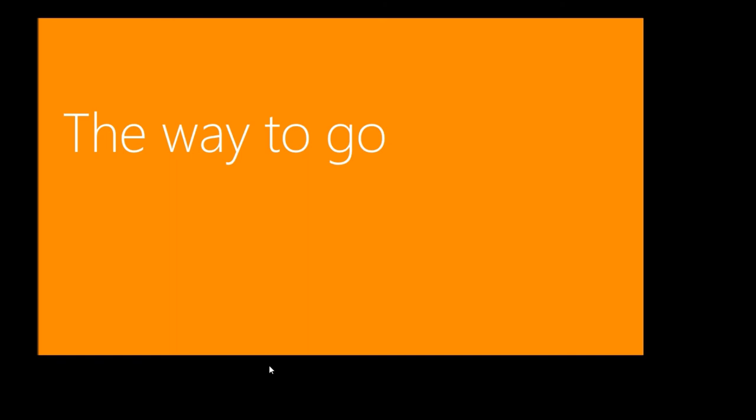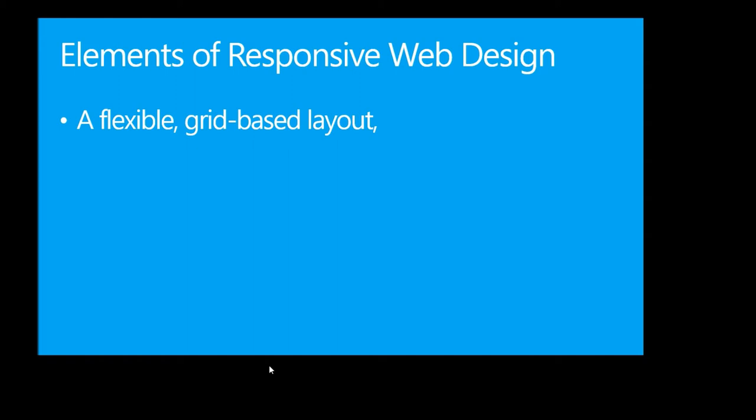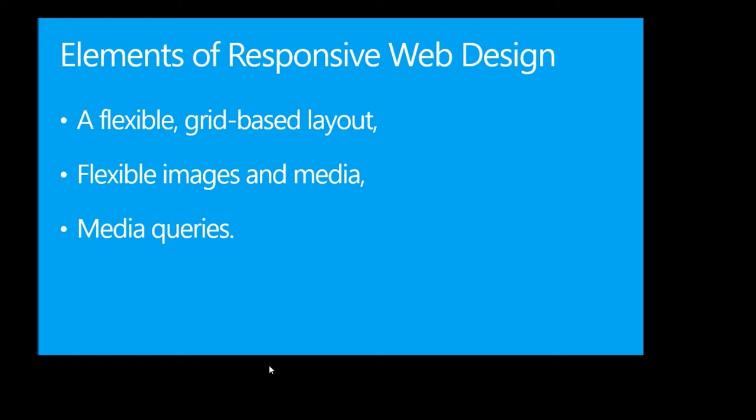Does that make sense? So now we know a bit about responsive web design. We saw a not-so-good example and a better example of what can be achieved. But what makes a site responsive? Basically you need four things: a flexible grid layout, flexible images and media, media queries — probably one of the best features of CSS in my opinion — and a fourth thing I'll talk about later.